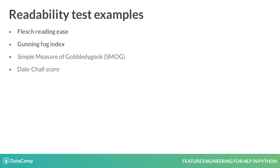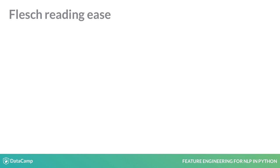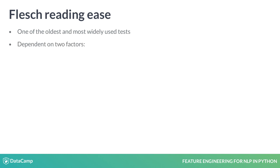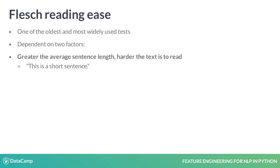However, once you understand them, you will be in a good position to understand and use the other scores too. The Flesch Reading Ease is one of the oldest and most widely used readability tests. The score is based on two ideas. The first is that the greater the average sentence length, the harder the text is to read. Consider these two sentences.